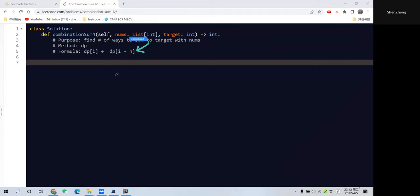Let me use a graphical explanation with this example where numbers equal 1, 2, 3, and the target is 4 to help understand.